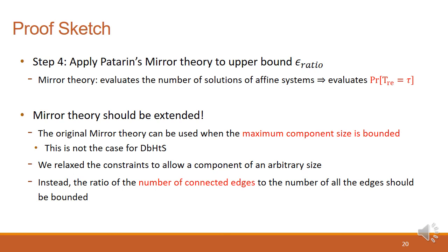The last remaining step is to upper bound the epsilon-ratio. Here, we apply Patarin's mirror theory, which evaluates the number of solutions of affine systems, and this is identical to finding the probability to get a transcript in the real world. However, we could not apply the plain mirror theory since the plain mirror theory can be applied only when the maximum component size is bounded. However, in double block hashed-and-sum, the expected maximum component size is too large, so the refinement of the mirror theory is required. Our refined mirror theory allows arbitrary component size, but the ratio of the number of connected edges to the number of all edges should be bounded.